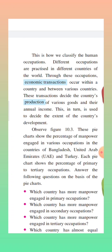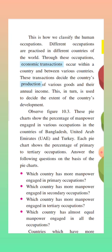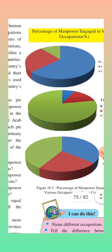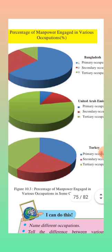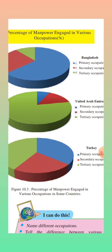These transactions decide the extent of the country's development. The country which has an excellent economy is a developed country. The pie chart shows the percentage of manpower engaged in various occupations in Bangladesh, United Arab Emirates, and Turkey. In Bangladesh, primary occupation is on a large scale, secondary occupation is less than primary, and tertiary occupation is very less. So Bangladesh, having more primary occupation, is a developing country. In the United Arab Emirates, primary occupation is in very small quantity, secondary is a little bit, and tertiary occupation is in very large quantity — so UAE is a developed country.